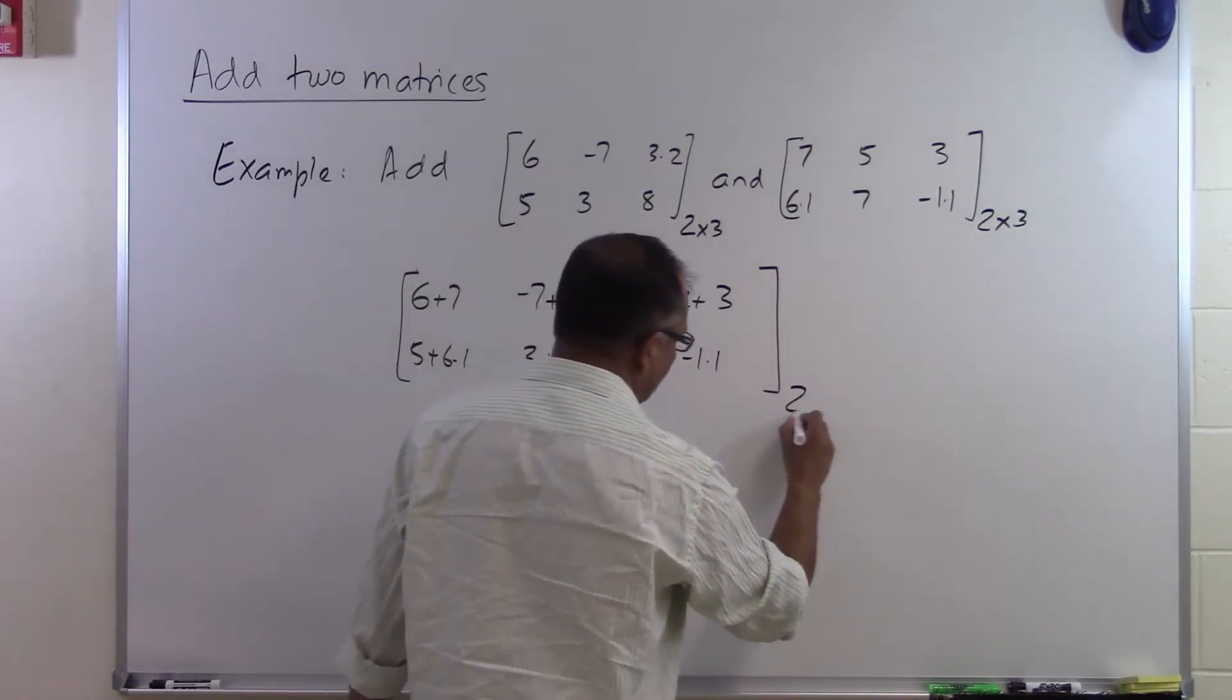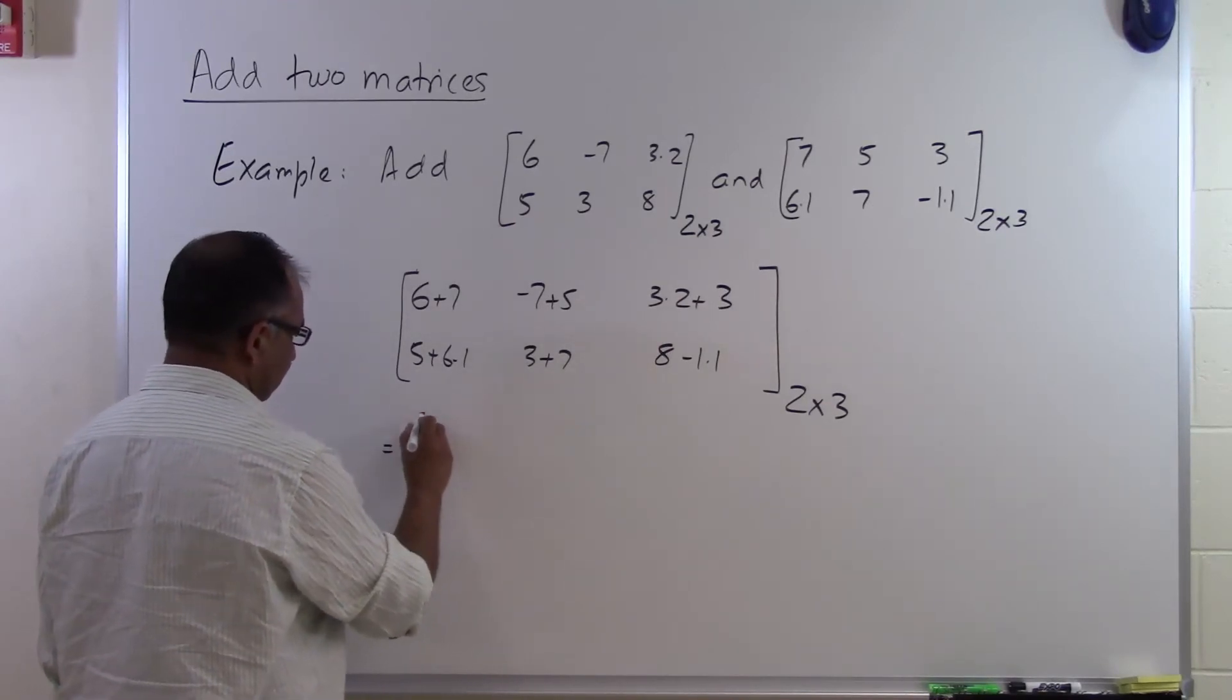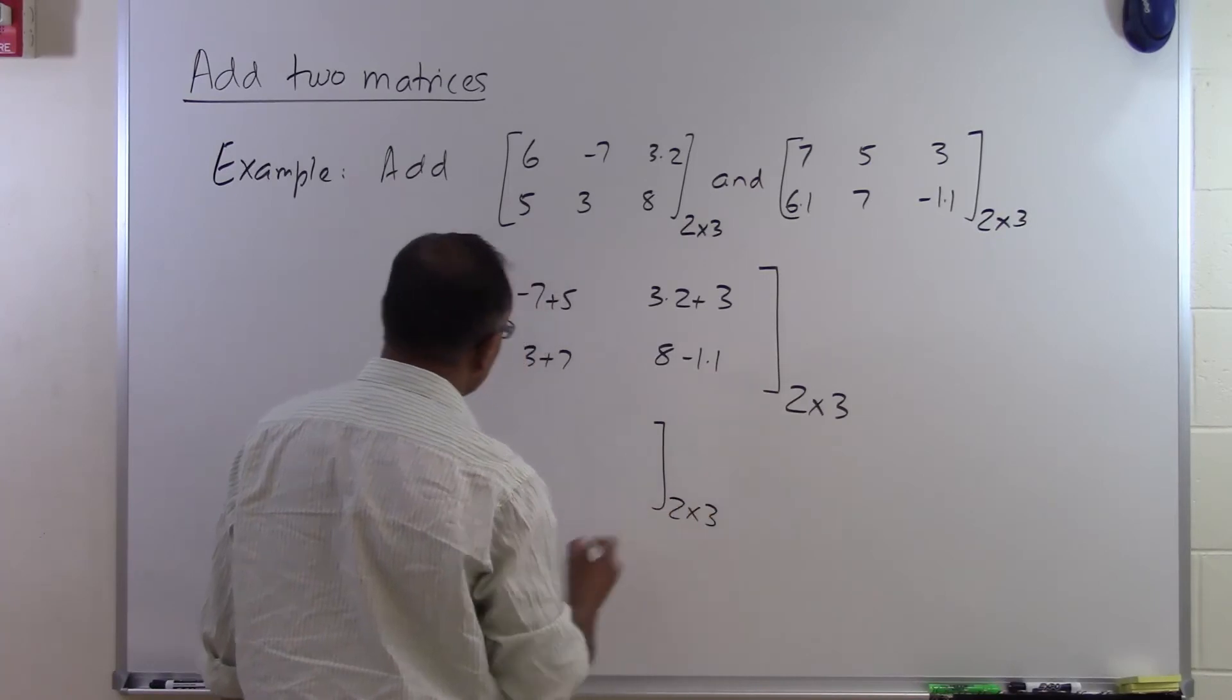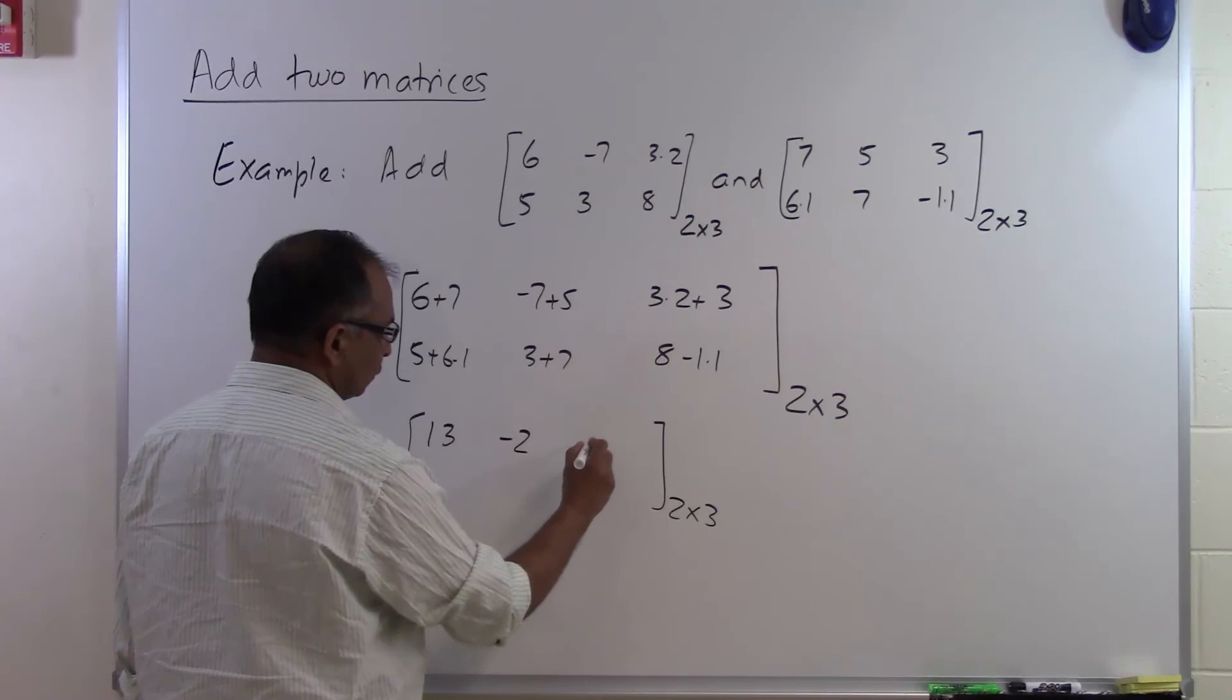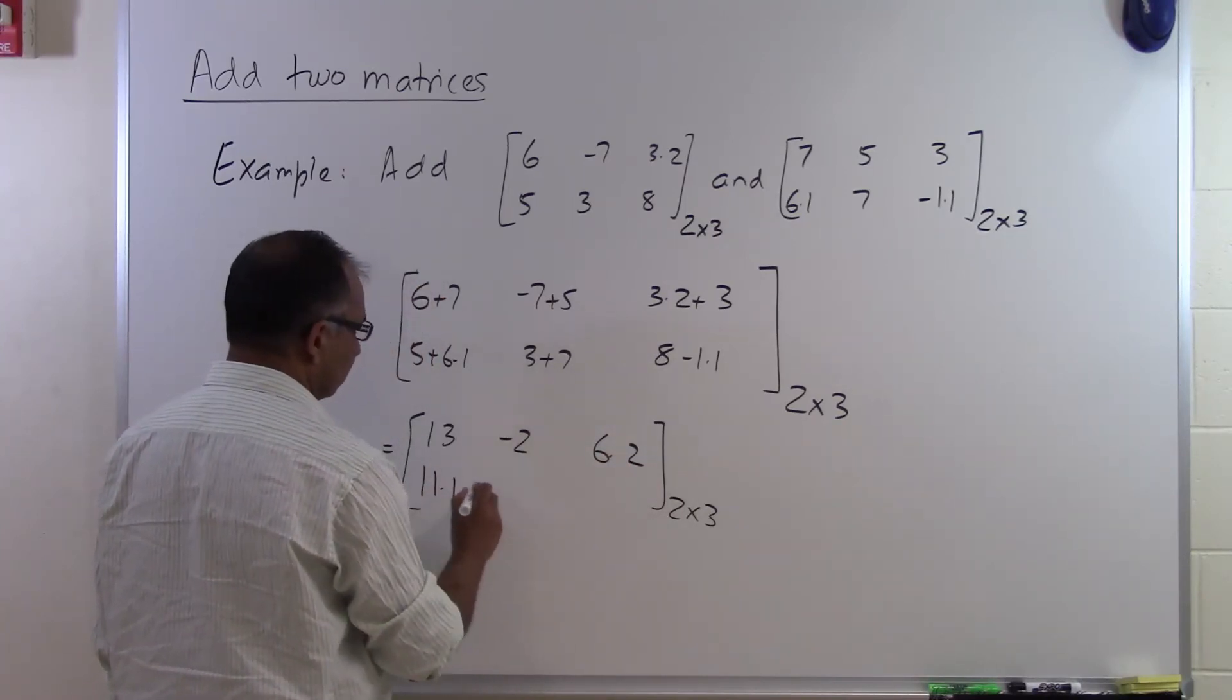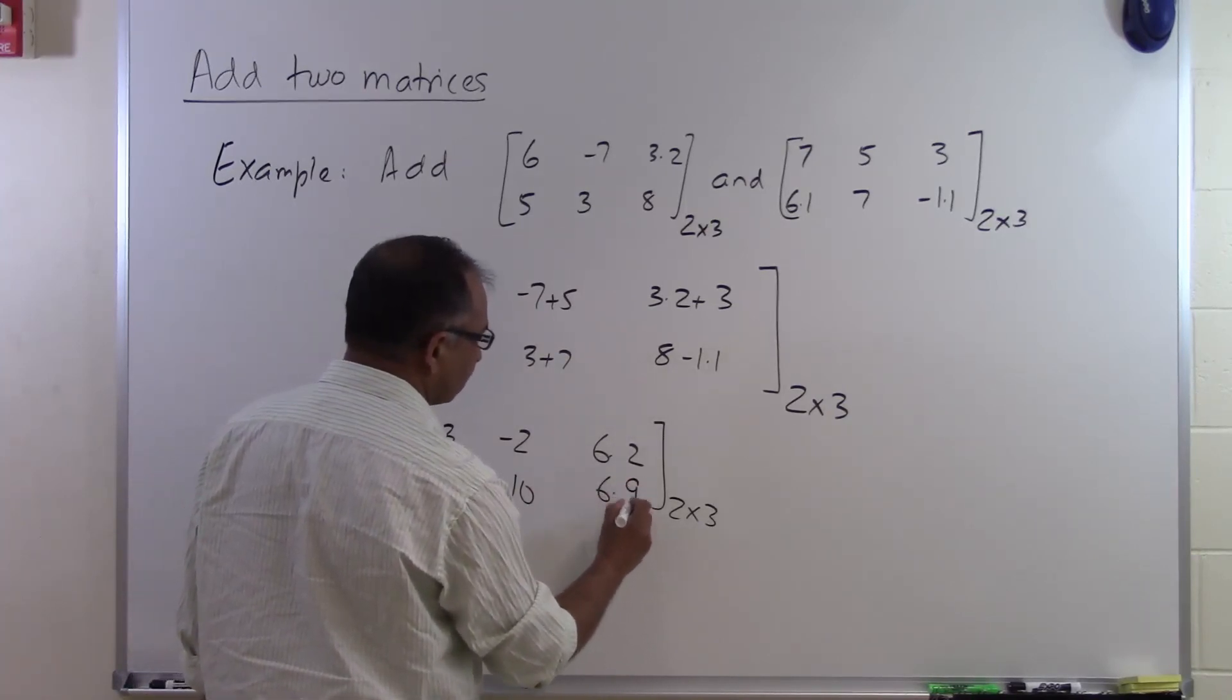This will also be a two rows and three columns matrix. 6 plus 7 is 13, this one is -2, this one is 6.2, this is 11.1, that is 10, and this is 6.9.